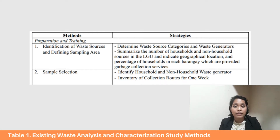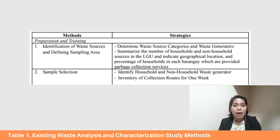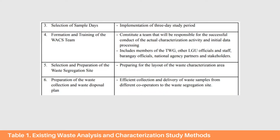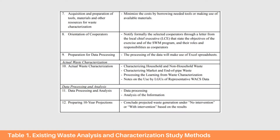The first stage — preparation and training — consists of nine methods and a lot of strategies. We have preparation of needed inputs and resources, which includes identification of waste sources, defining sampling site, sample selection, selection of sampling days, selection and preparation of waste segregation site, preparation of waste collection and disposal plan, acquisition of materials and other resources, orientation for cooperators, and preparation for data processing.